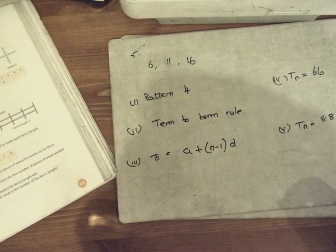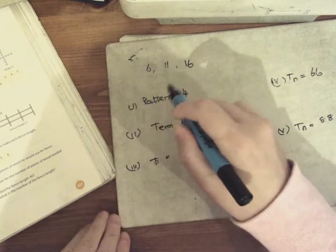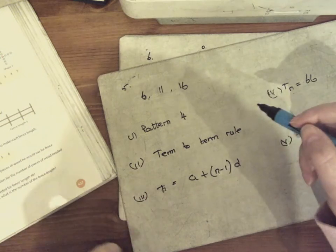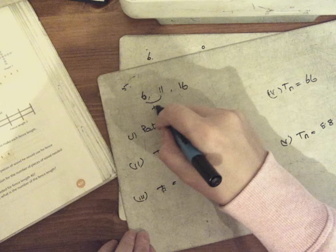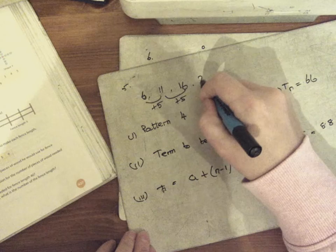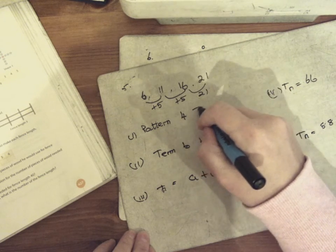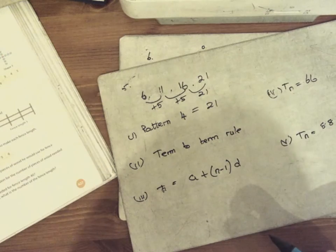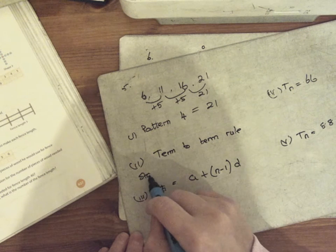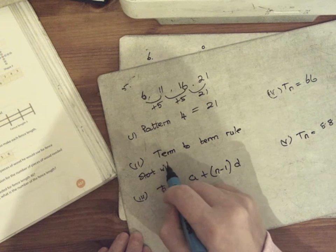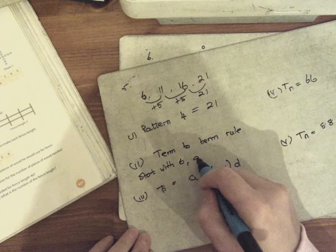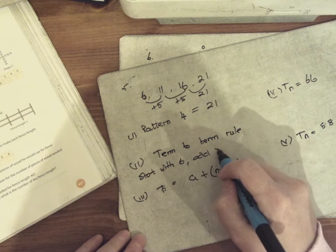Number 5 gives us hexagons. In the first hexagon there are 6 matchsticks. Then they add another one, so 11 matchsticks, then 16 matchsticks. You can see it's a linear sequence going up in 5s. The next one would add another 5, giving 21. So pattern number 4 has 21 matchsticks. For the term-to-term rule, they just want it in words: start with 6 and then add 5 every time.